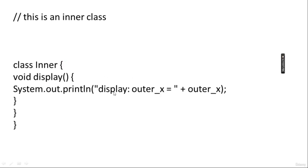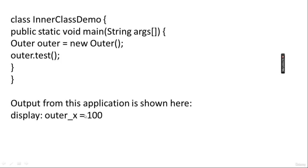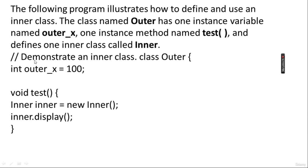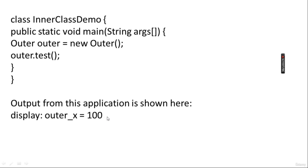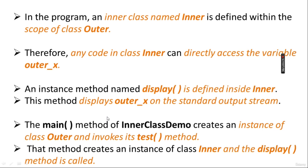What does display show? It contains display of outerX, and outerX is displayed as 100. In the InnerClassDemo class containing the main function, we create an object of the outer class. Whenever you create an object of the outer class, only then can you access the inner class. Whatever is included in the inner class cannot be accessed without creating an object of the outer class. The output is: outerX = 100.